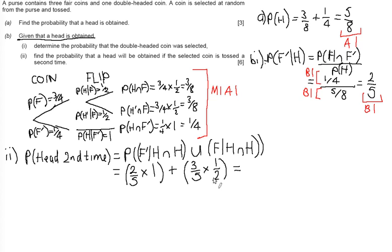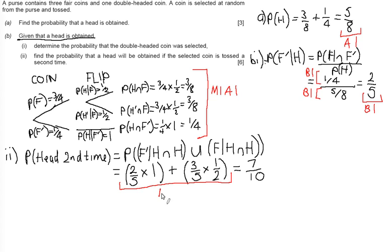Working this through, we get two-fifths plus three-tenths, which gives an answer of seven-tenths. For marks on this part, we get a method mark and an accuracy mark for the working line, and then a final accuracy mark for the answer of seven-tenths.